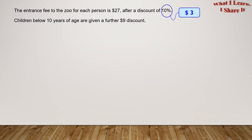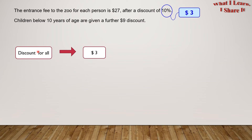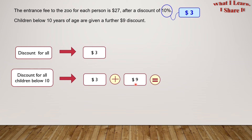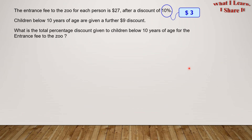The discount for each person is $3. Since children below 10 are given $9 more discount, the discount for all children below 10 will be $3 plus $9, which equals $12. What is the total percentage discount given to children below 10 years of age for the entrance fee to the zoo?